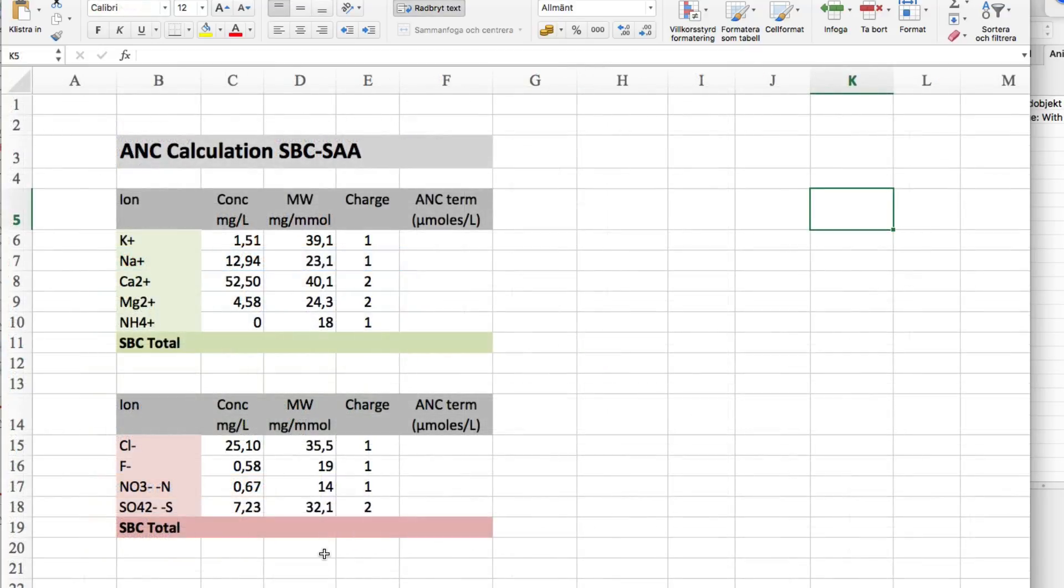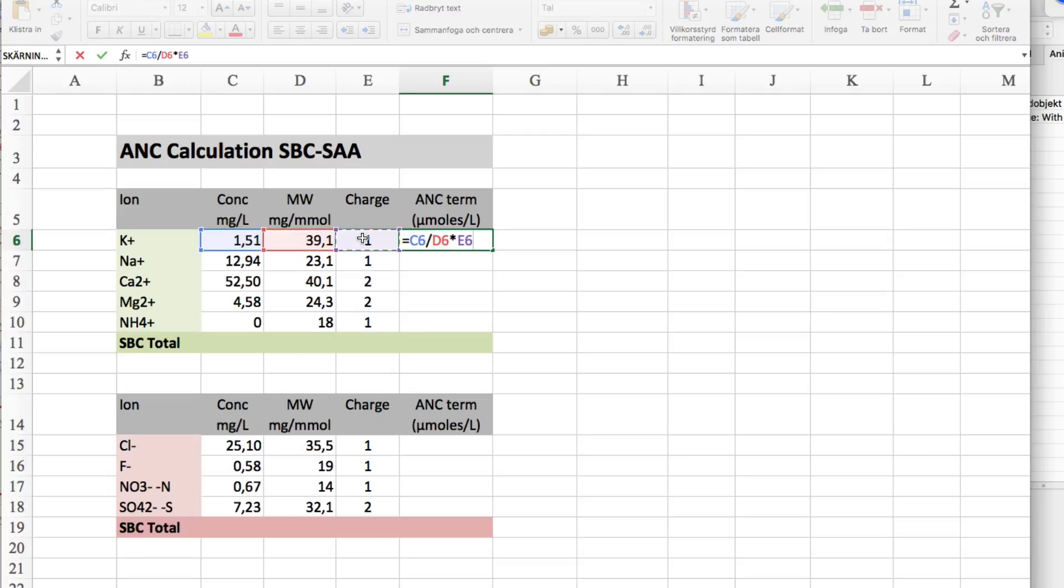Earlier, we have made calculations of the ANC as the contributions from the cations to the strong bases minus the anions to the strong acids. And what we did was to take the concentration in milligrams per liter, divided by the molar mass, multiplied by the charge, and then multiplied by a thousand to convert units to micromoles per liter.